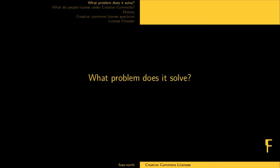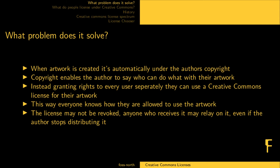So what problem do those licenses solve? When artwork is created, it's automatically under the author's copyright. The copyright enables the author to say who can do what with their artwork. Instead of granting rights to every user separately, they can use a Creative Commons license. That way, everyone knows how they are allowed to use that artwork. And the license may not be revoked — anyone who receives the license may rely on it, even if the author stops distributing it.